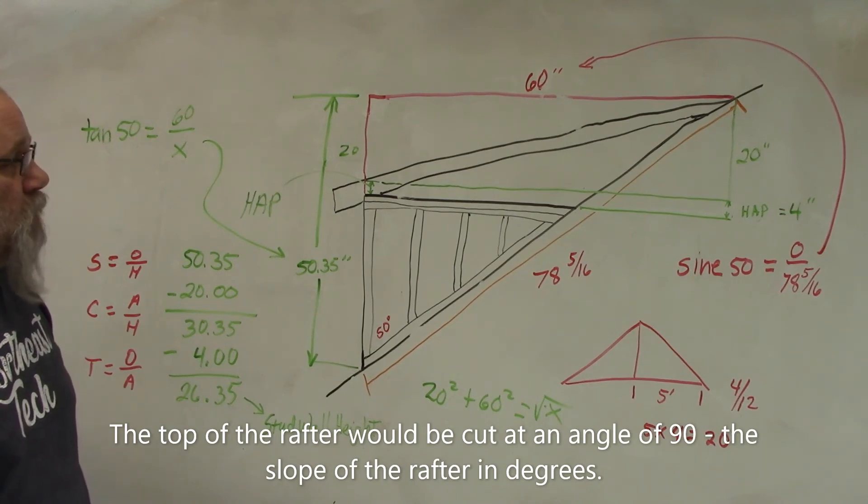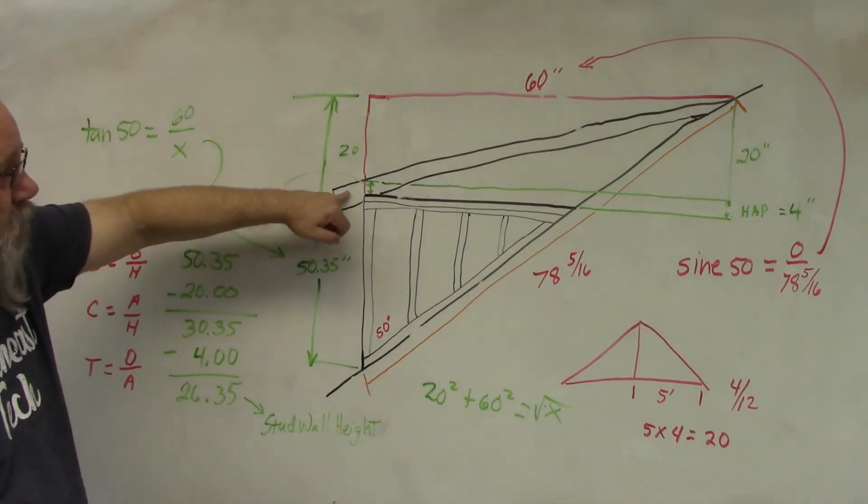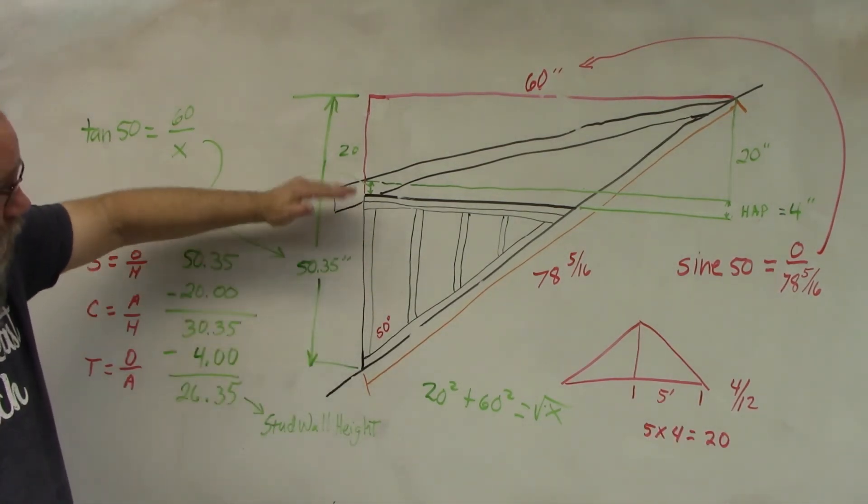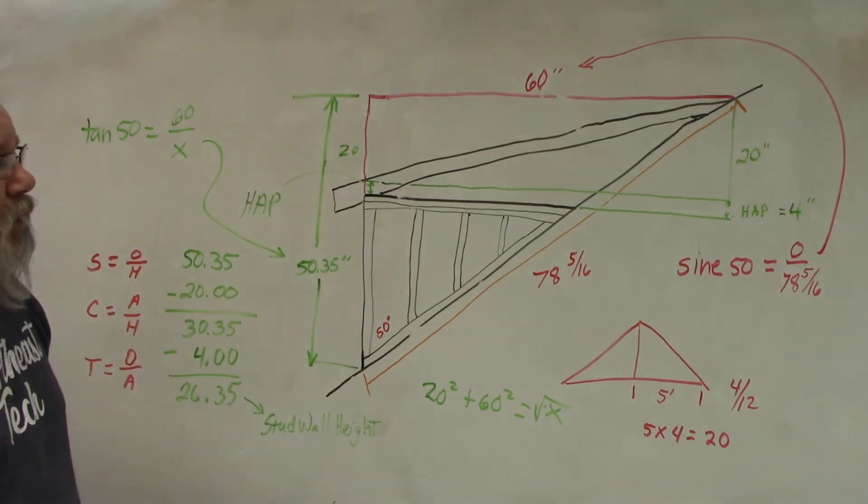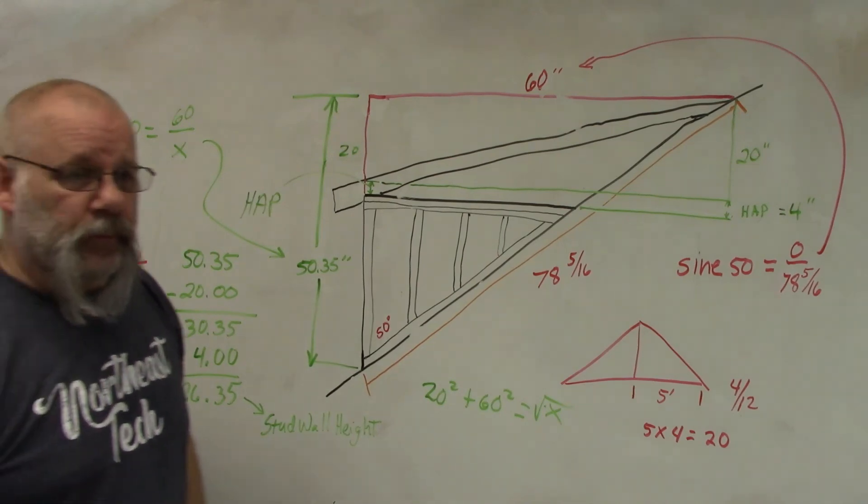Okay, so that's all you need to do to figure out the rafter length for your shed dormer, and you have the height of your wall, so you know how high to build the wall and put your shed rafters on top of that.